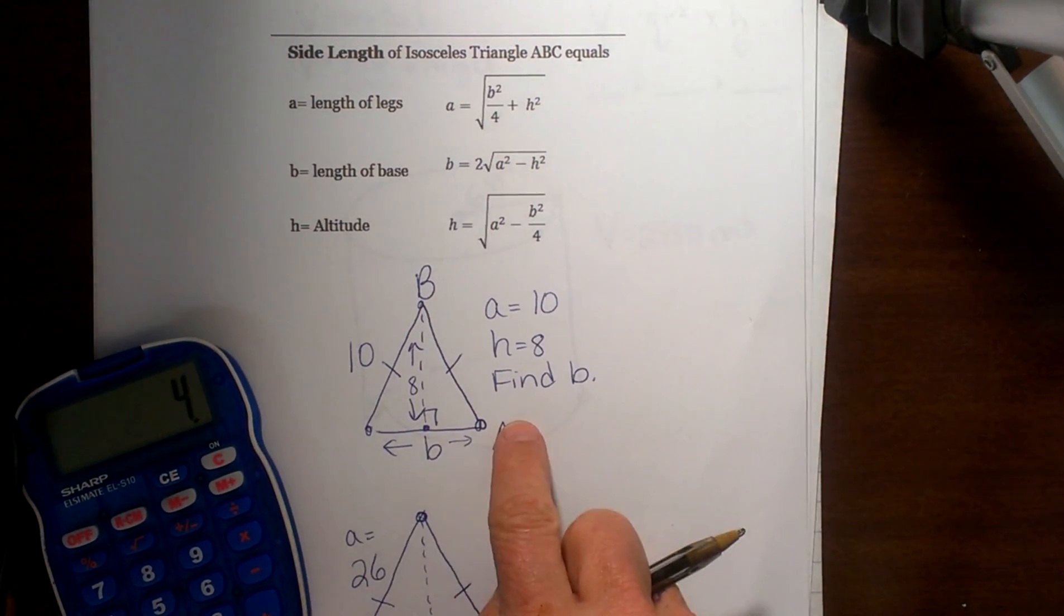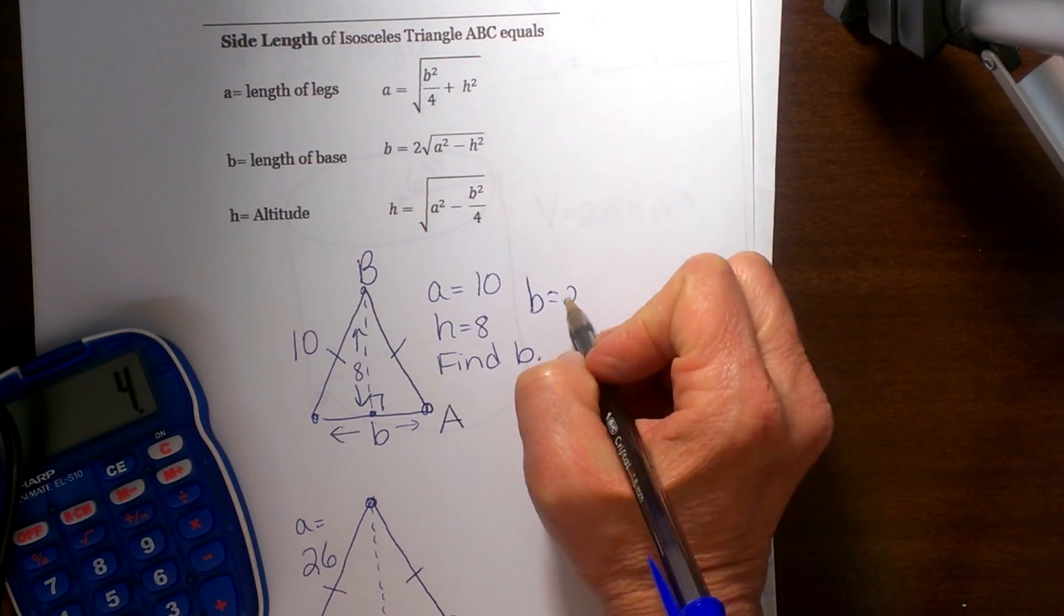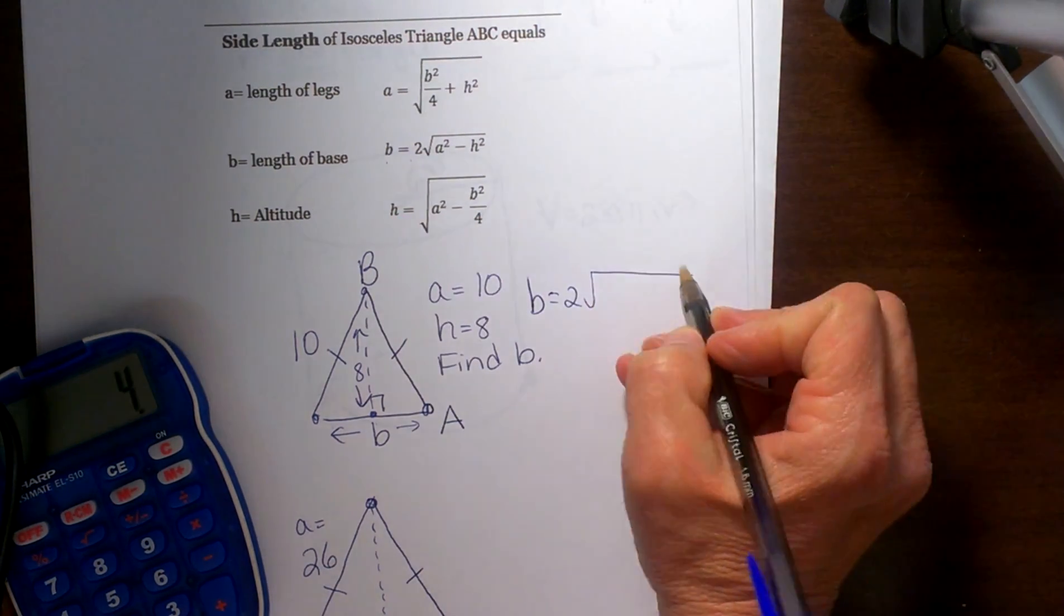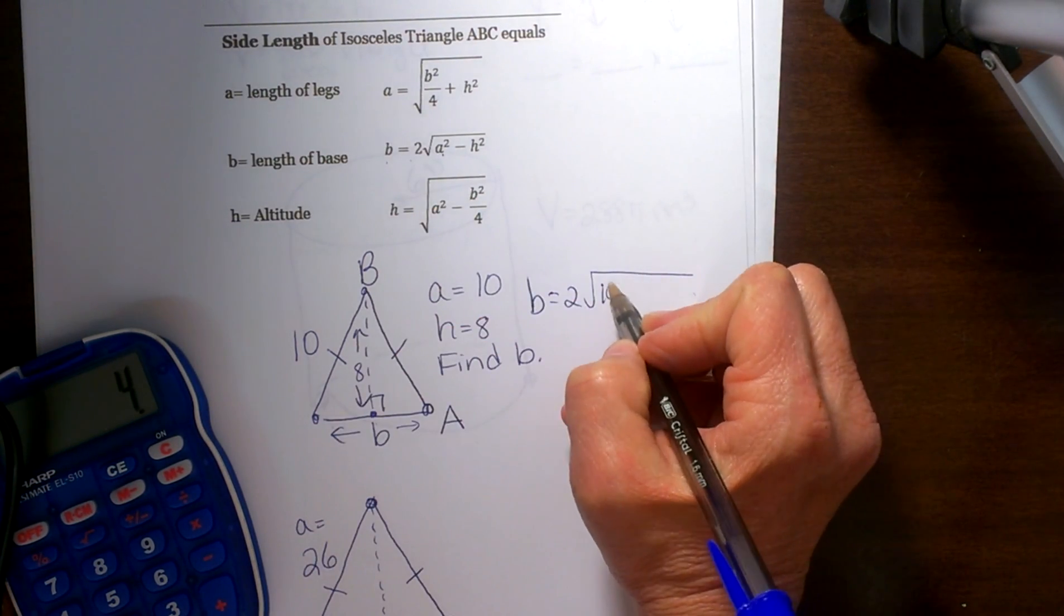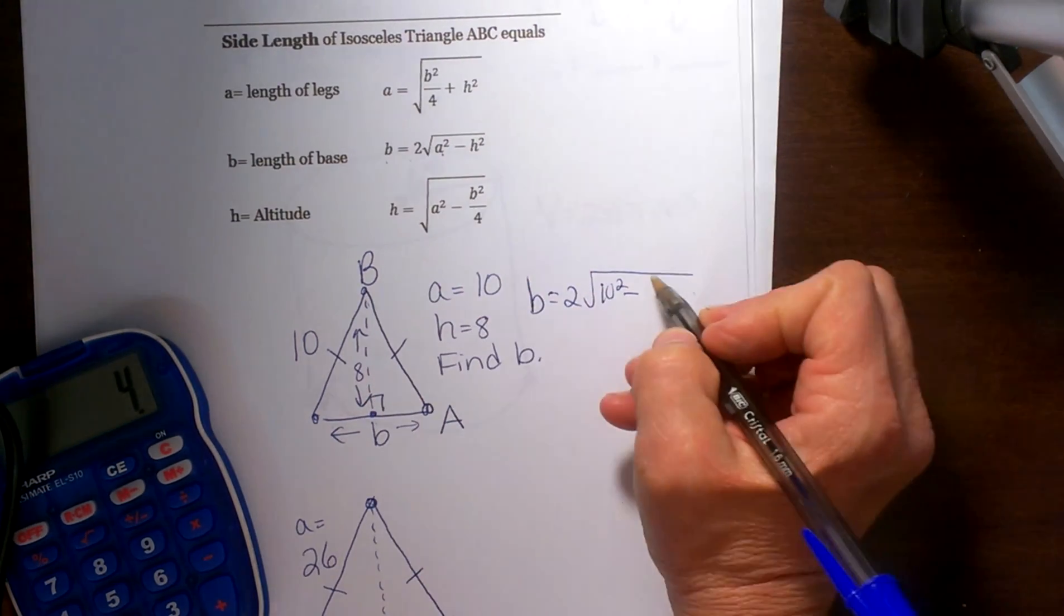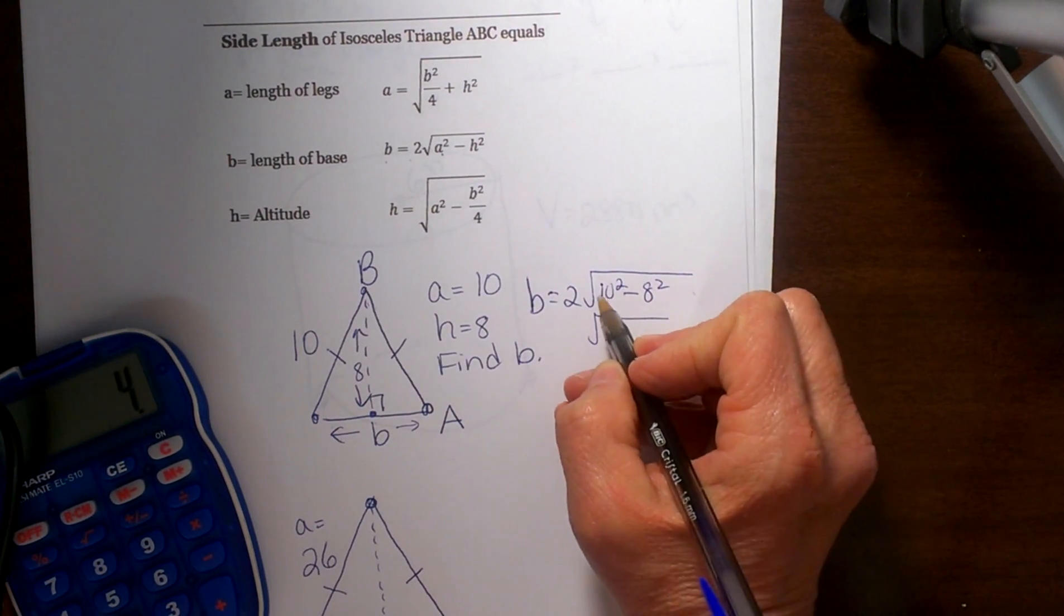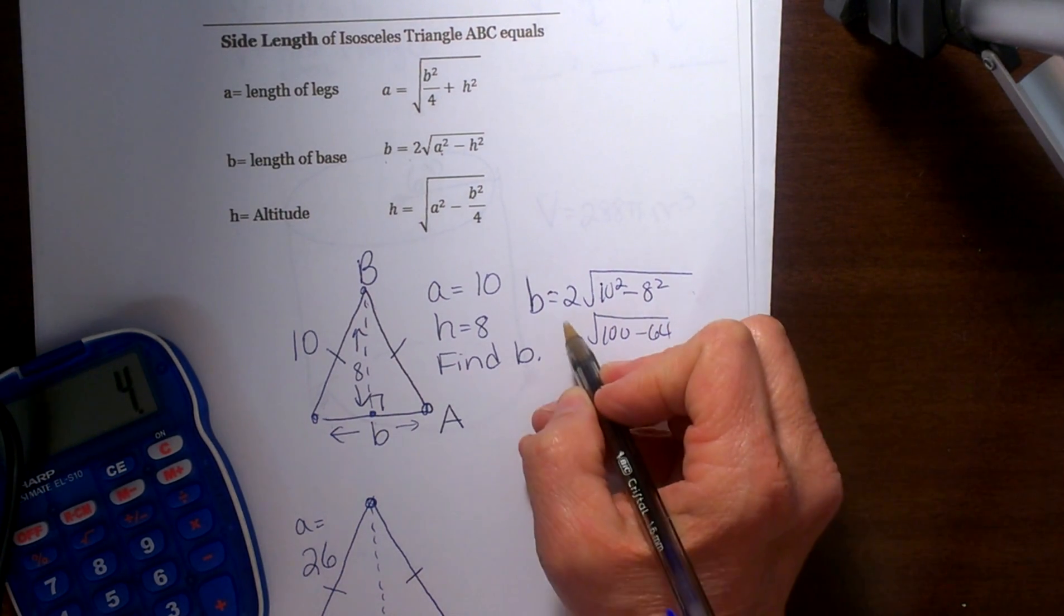Let's use this formula to find this base length. I need to know that base equals 2 times the square root of a squared, where a in this case is 10, so I am going to square that, minus my height which is 8 squared. So let's see, that is going to give me 100 minus 64.